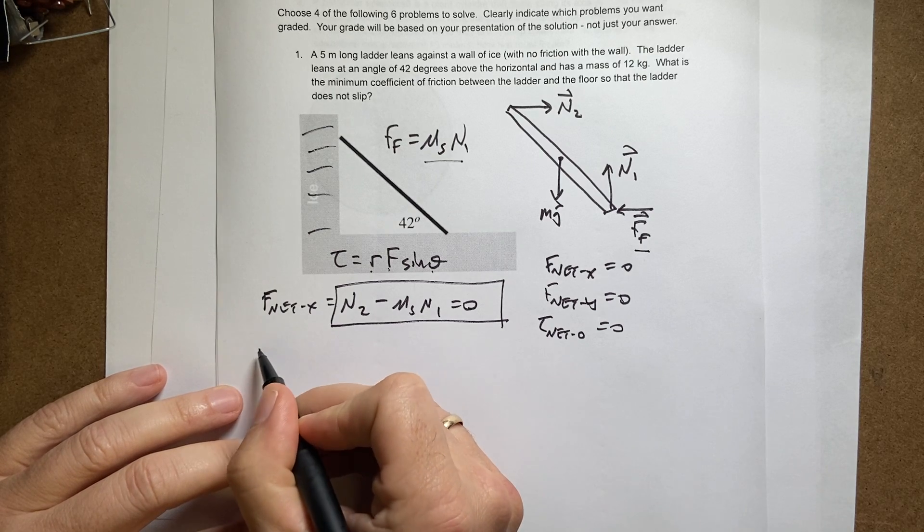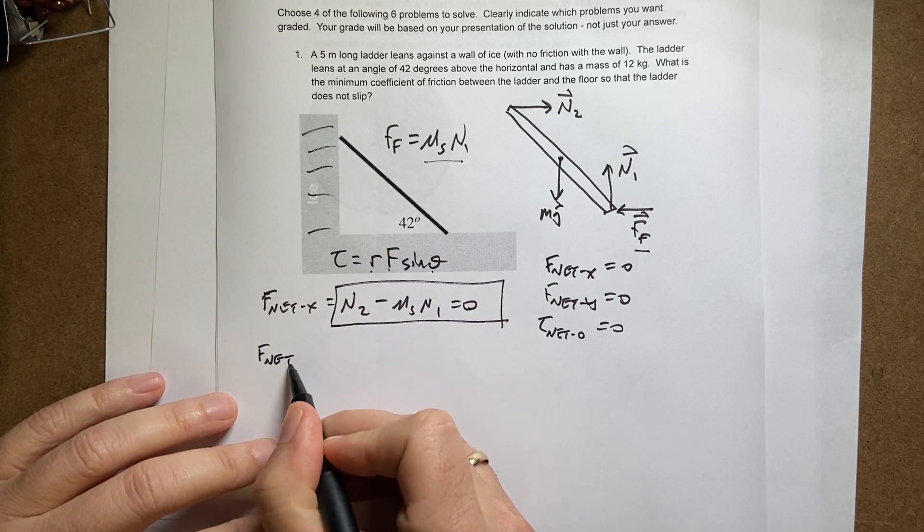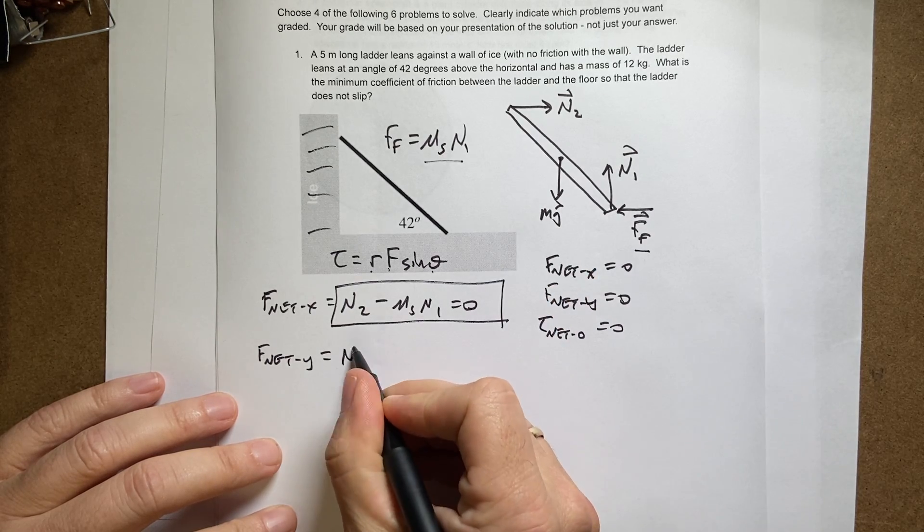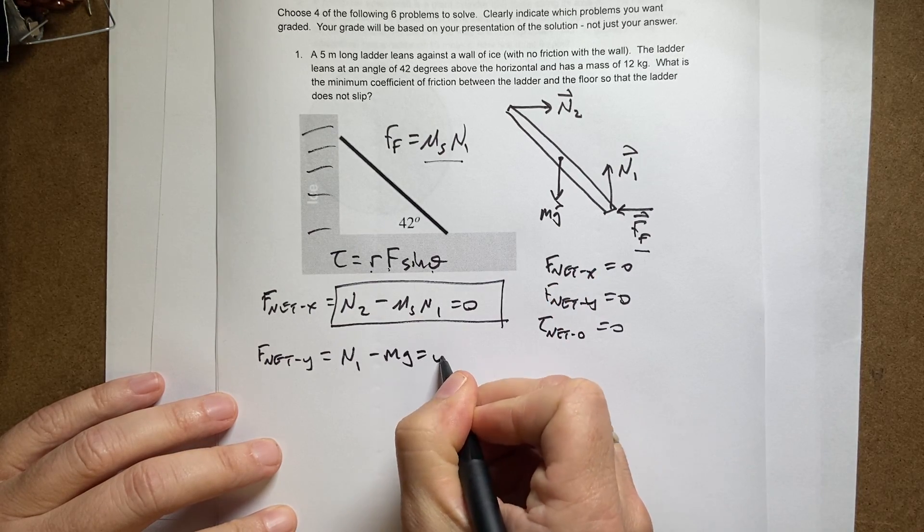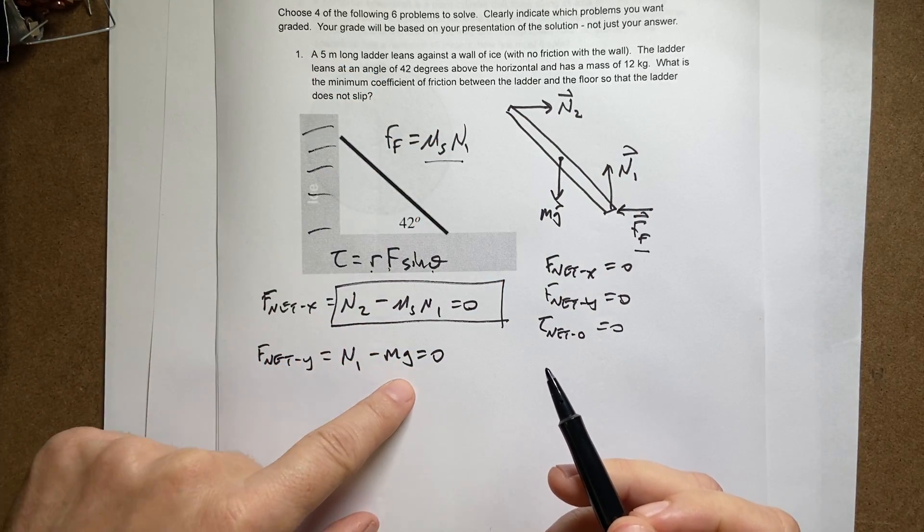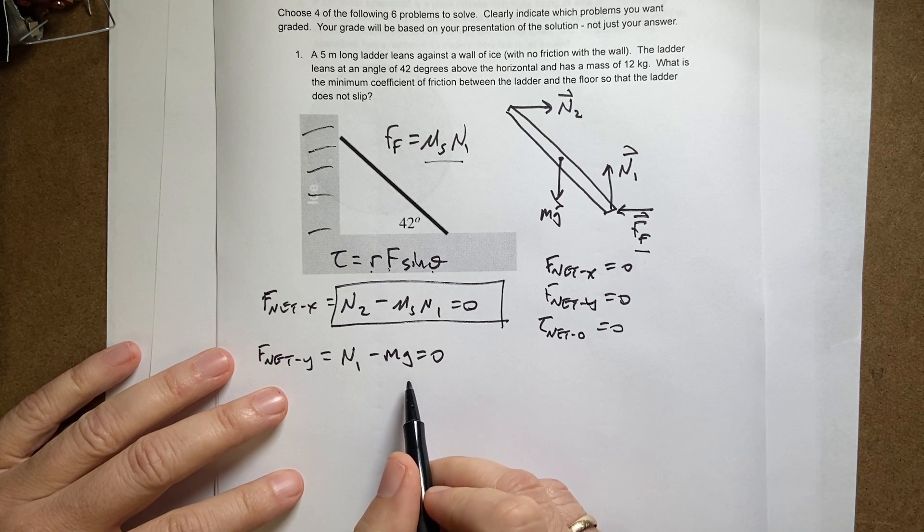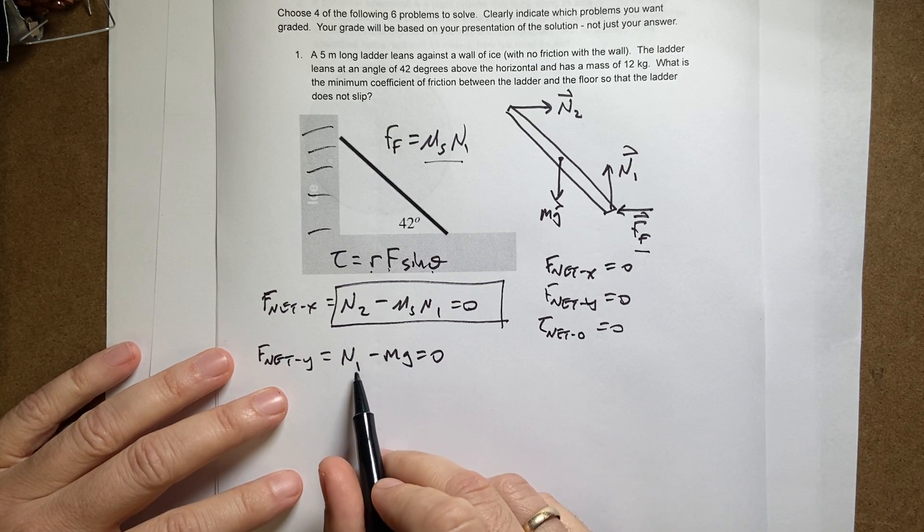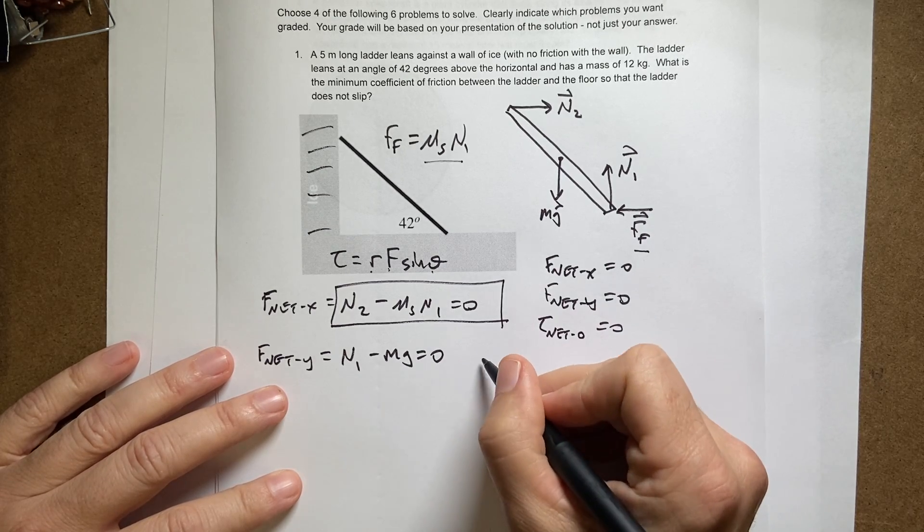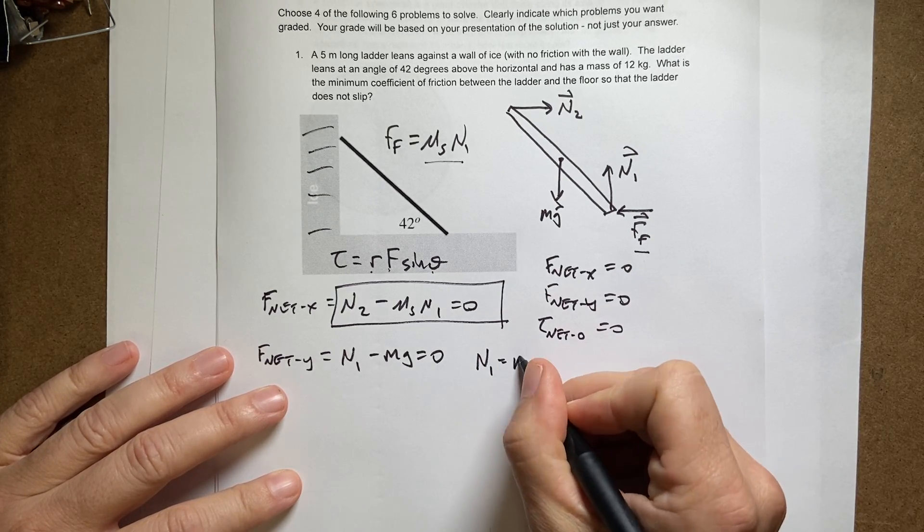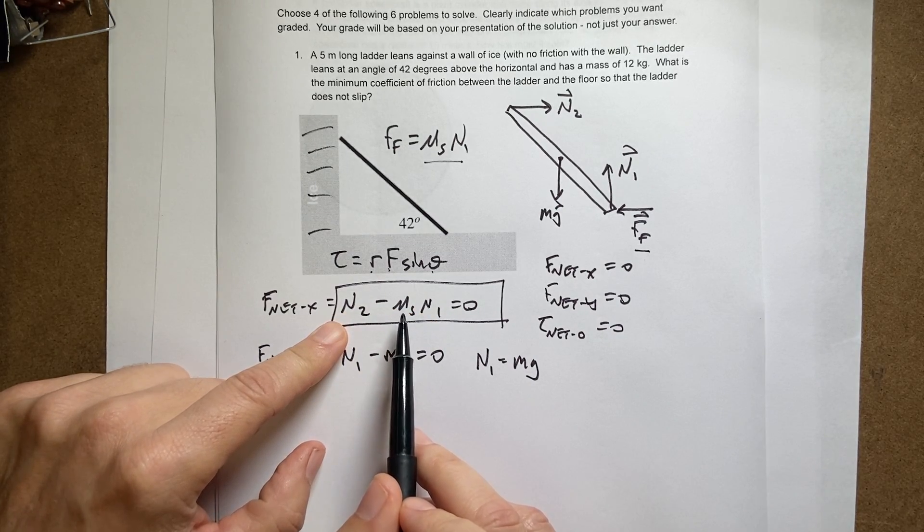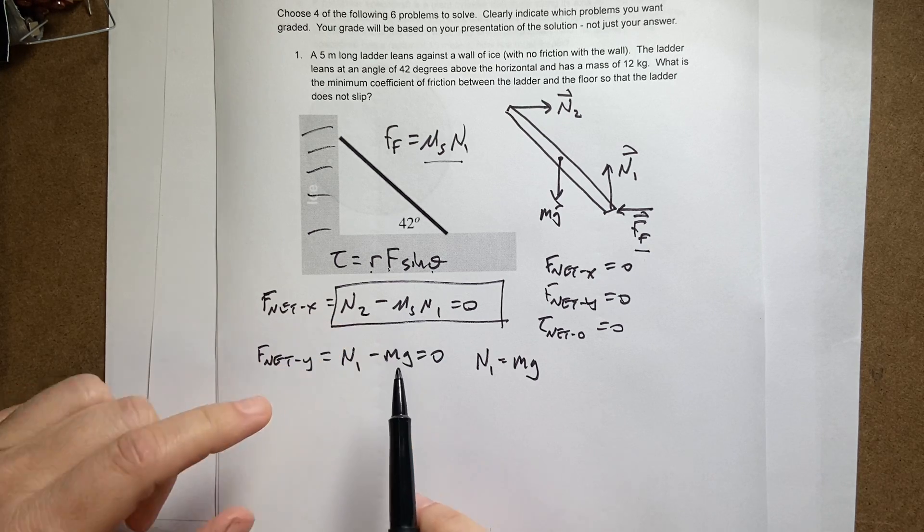Next equation, F net Y. So I have N1 minus mg equals zero. Now, you notice here, these are vectors, but these are scalars because I'm just in the Y direction. So in this case, I actually can solve for N1. I know what M is and I know what G is. So I could say N1 equals mg. I could put that in up here, but still I don't know mu S or N2. So that doesn't really help.